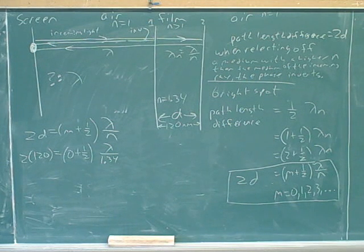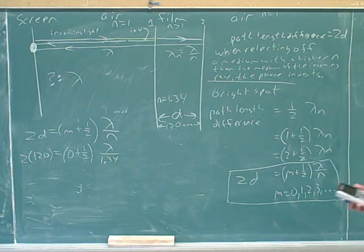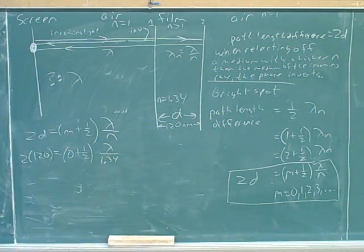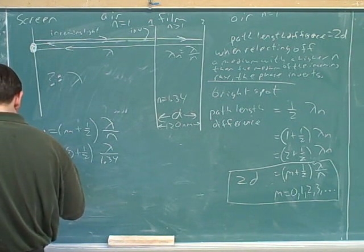We can simplify our equation a little bit before we solve. Two times 120 is 240.